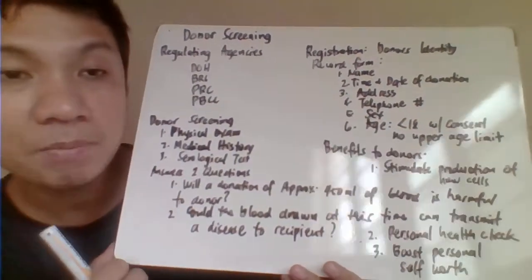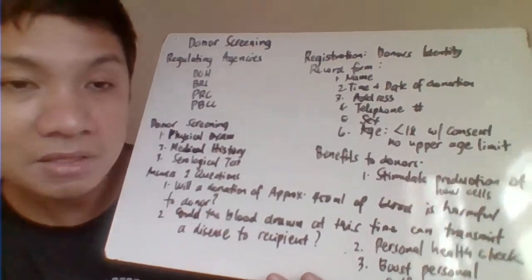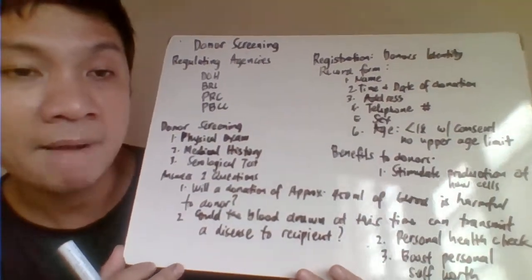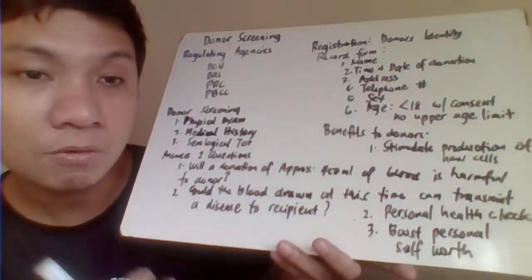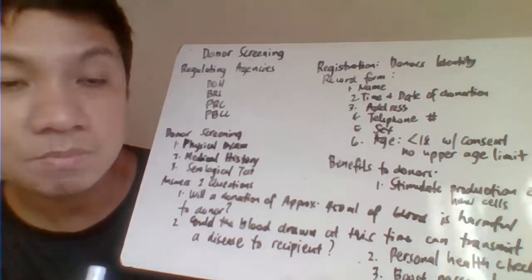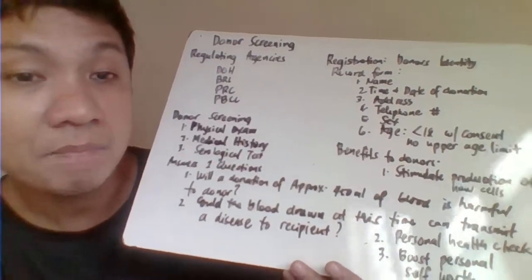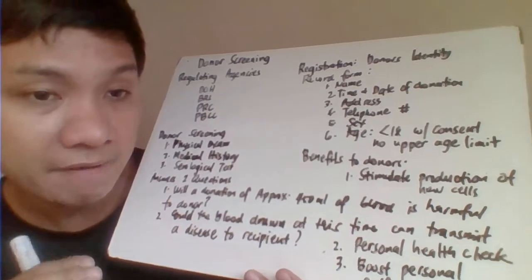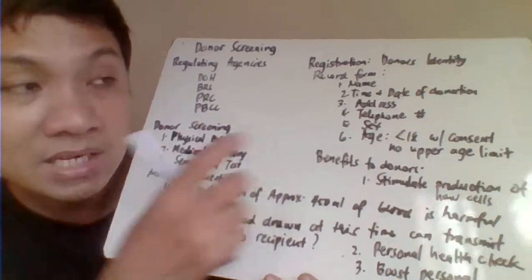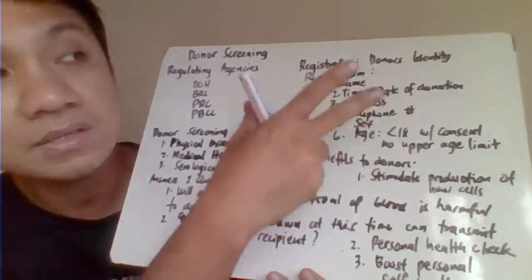Some blood banks collect the blood and allow the patient to go home before serological tests are completed. If the patient tests positive for HIV, the registration information allows blood bank personnel to trace and inform the patient of the result. That is why we maintain this registry information.